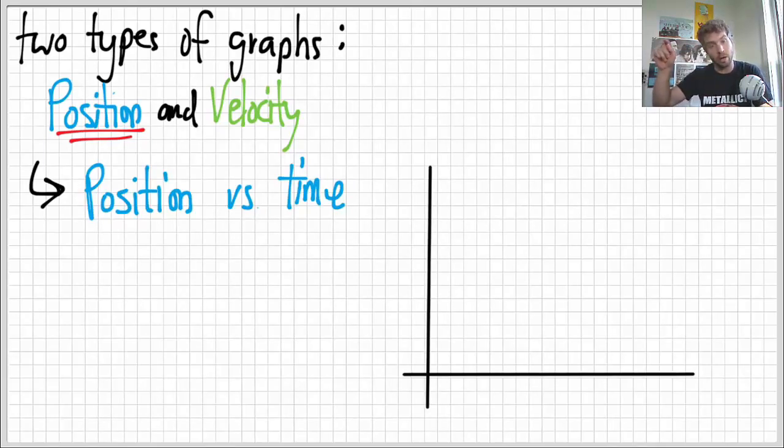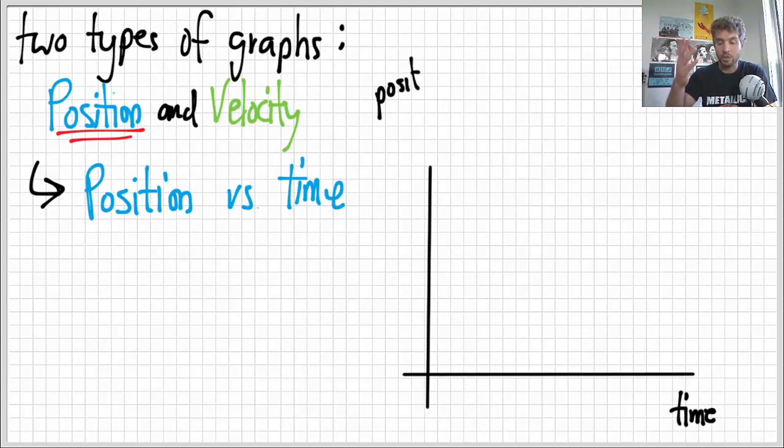Our graphs are going to be XY graphs. Y axis, X axis, and so on and so forth. Time is almost always on the X axis. Very rarely will you have time not on the X axis. So, time goes down here on that horizontal axis. So, of course, the Y axis is the position.